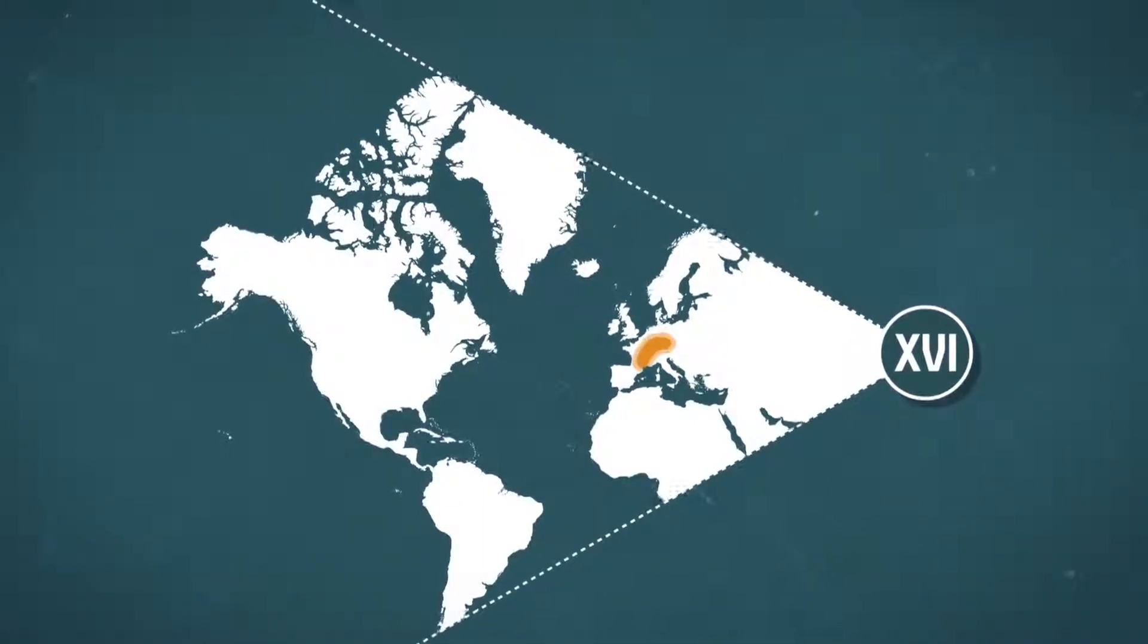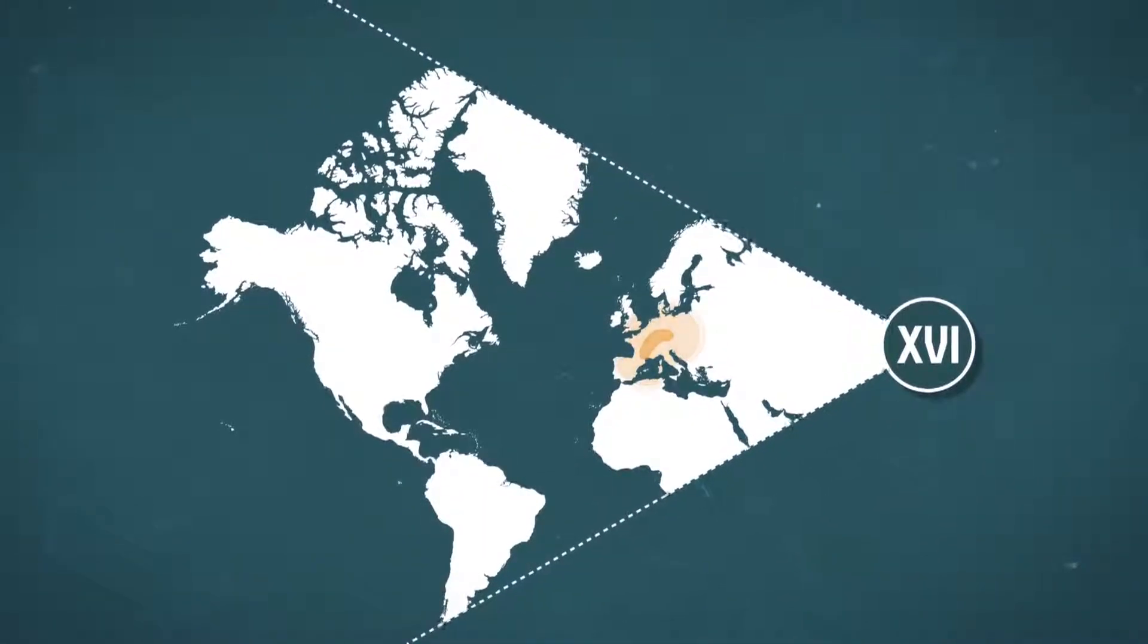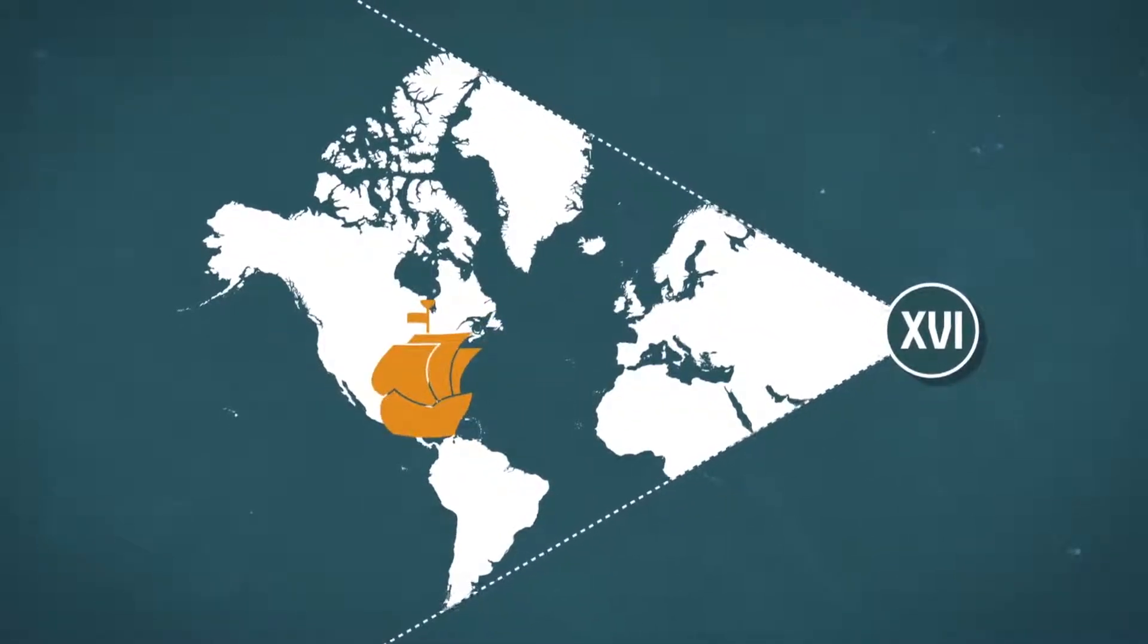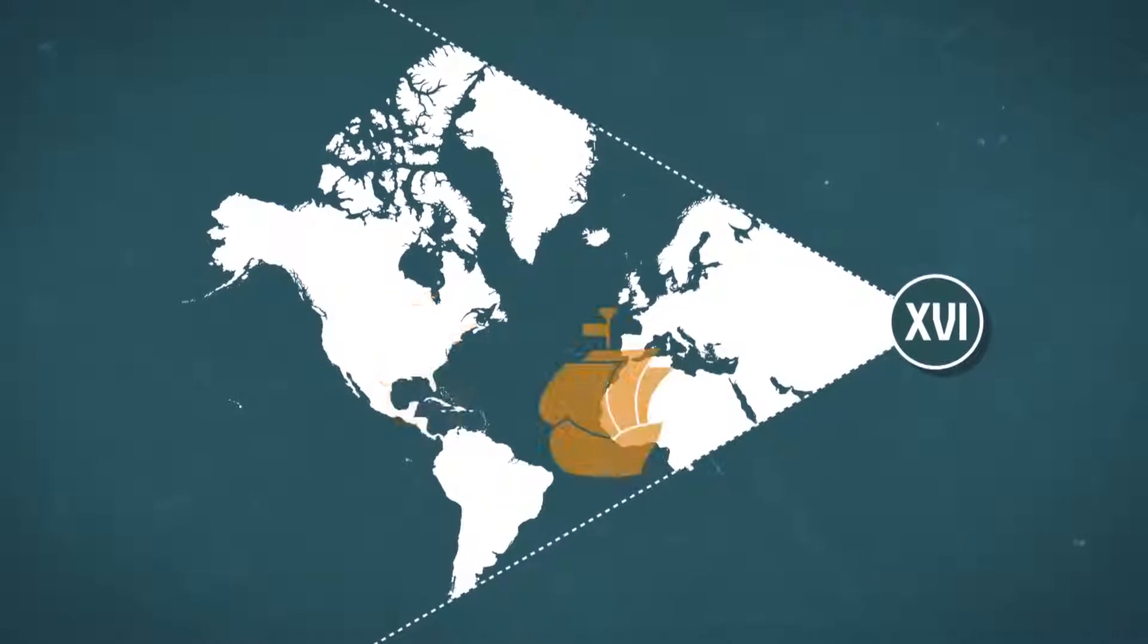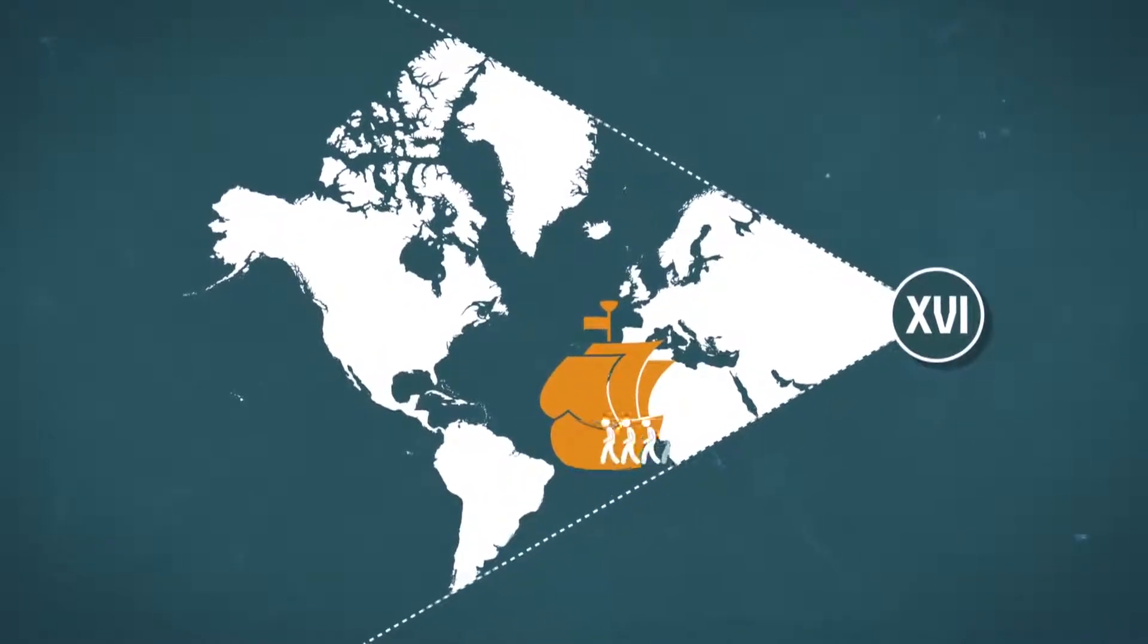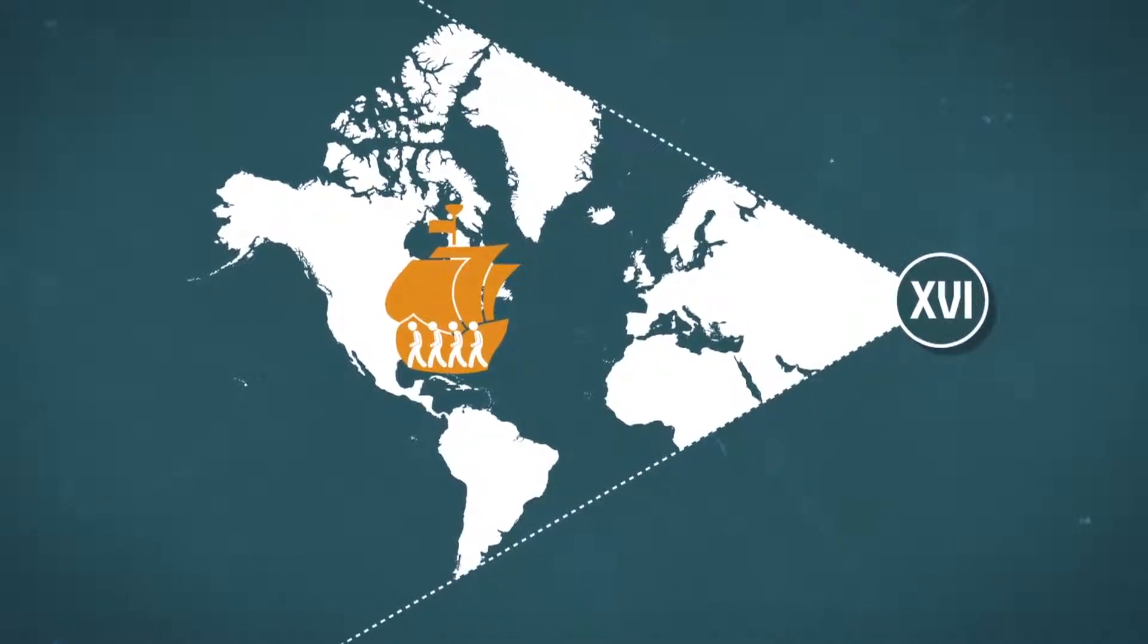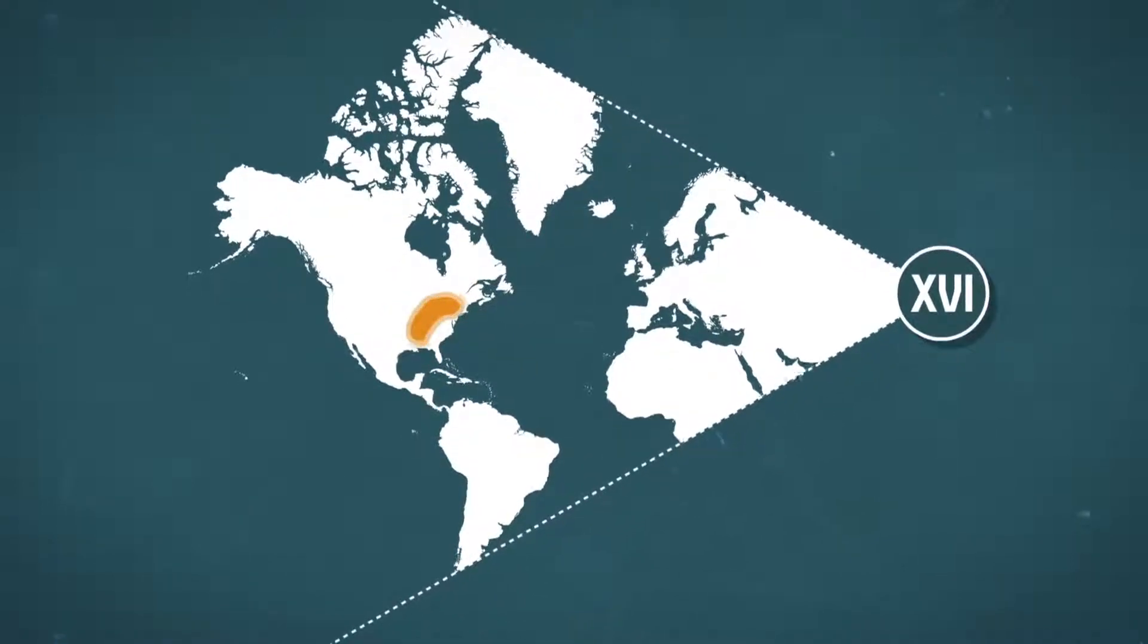The parasite was rife in Europe and the devastation it caused was comparable to that it wreaks in Africa today. The 16th century saw the conquest of the New World and the beginning of the slave trade. Europeans loading African slaves into their ships' holds unwittingly imported malaria to the Americas.